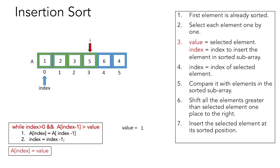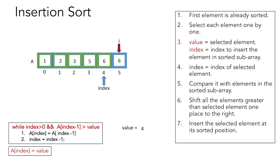Elements 1, 2, 3, and 5 are now correctly positioned. Moving to element 6: the value at index-1 is 5, which is less than 6, so the loop condition is false immediately — element 6 is already at its sorted position. For the last element 4: 6 > 4, so we shift 6 right; 5 > 4, so we shift 5 right; 3 < 4, so the loop ends and we insert 4 at index 3. The array is now fully sorted.